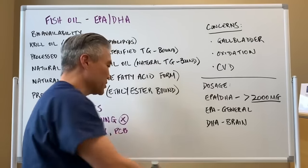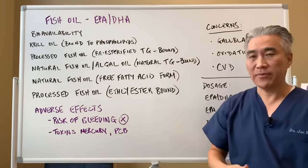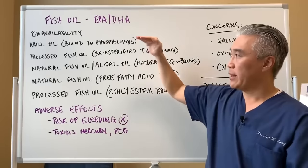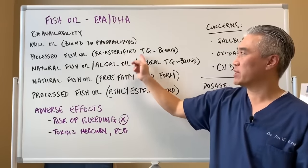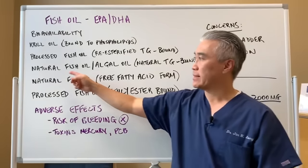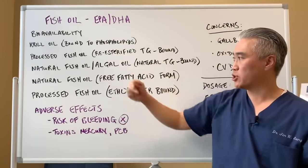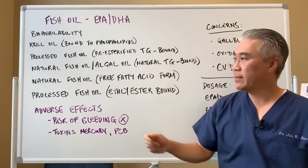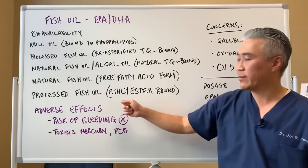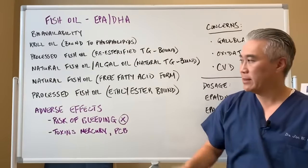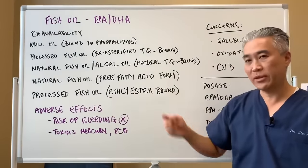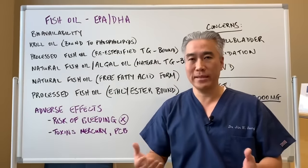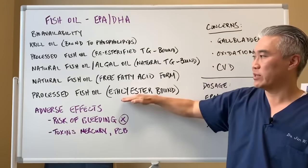Fish oil comes in a variety of different forms. From highest to lowest bioavailability: krill oil bound to phospholipids, then processed fish oil re-esterified to triglyceride-bound, natural fish oil or algal oil as natural triglyceride-bound, natural fish oil in free fatty acid form, and finally processed fish oil as ethyl ester-bound. The ethyl ester form is what pharmaceutical companies use because they can patent it, but its bioavailability is really low on the list.